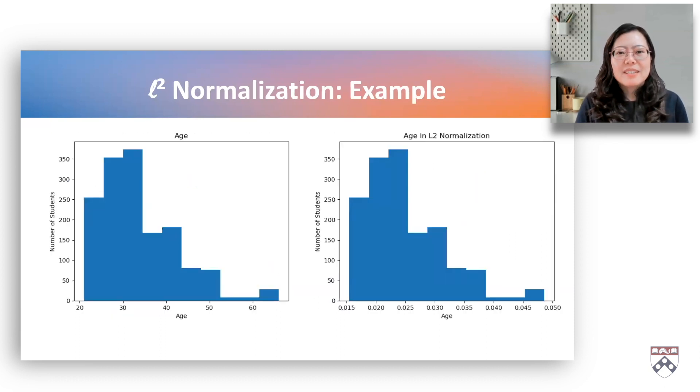L2 normalization provides a standardized representation that is particularly useful in scenarios where the direction of the vector is significant. Let's take the age as an example again. The left graph describes the original age. The right one shows the age in L2 normalization. Their squared values sum to 1. Transformed age preserves the relative relationships with original data and ensures the overall magnitude is consistent.